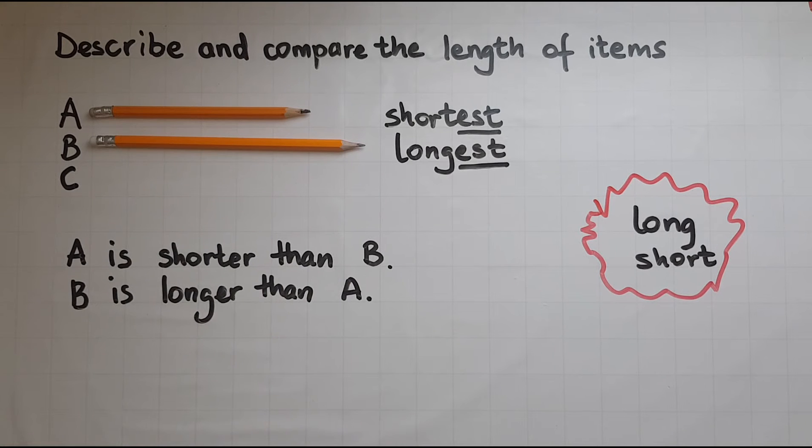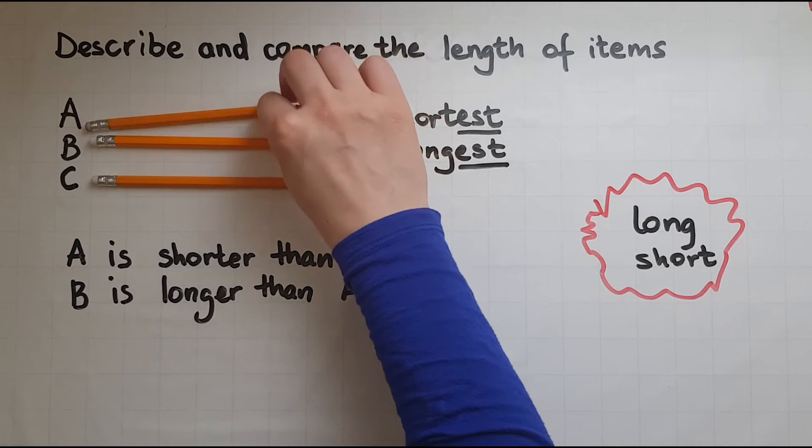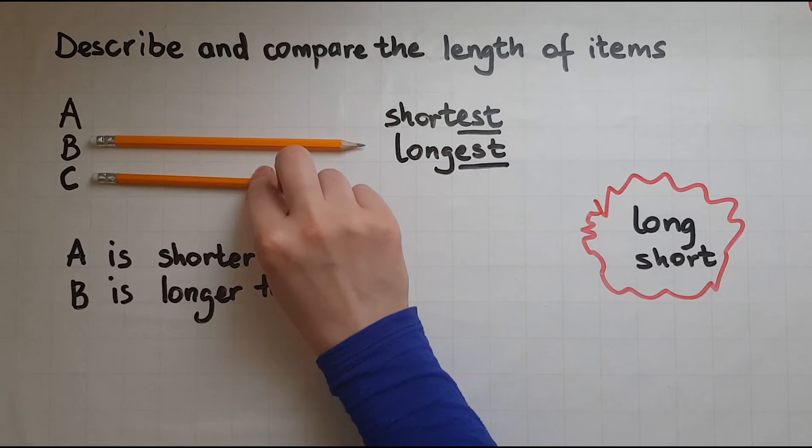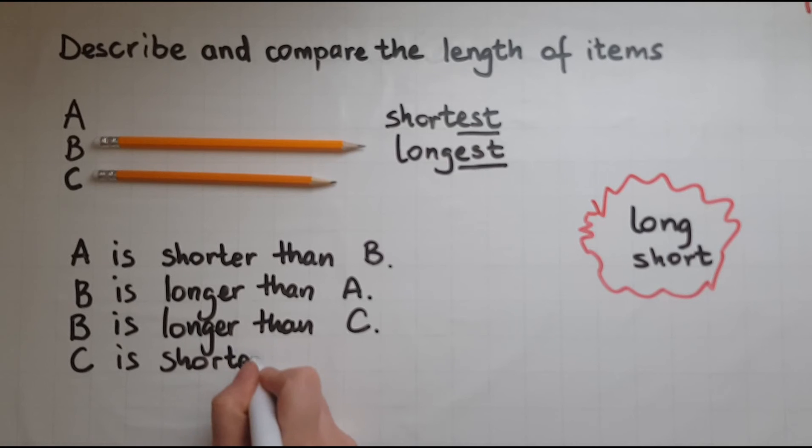Now if I compare B with C let's have a look. So B is still longer. So B is longer than C. C is shorter than B.